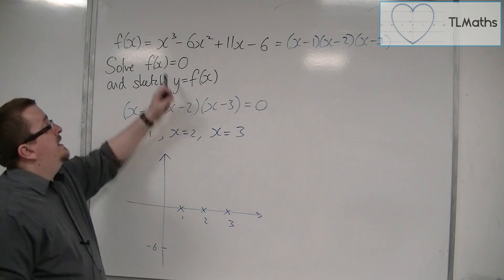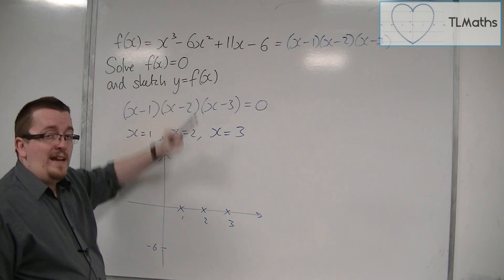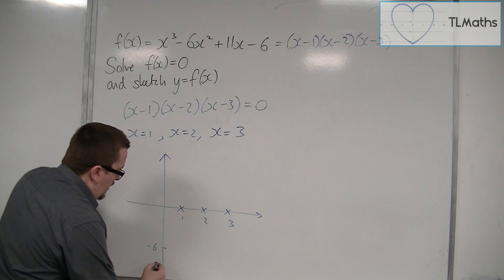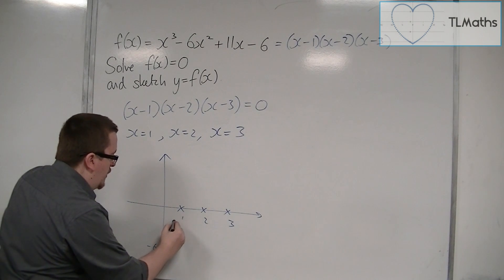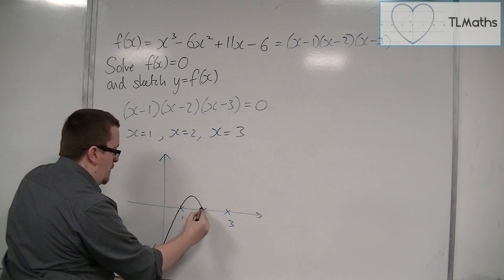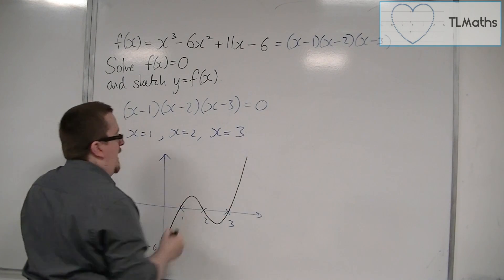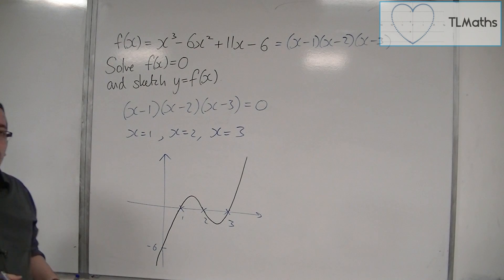Now a cubic in this case with a positive x cubed must start in the bottom left, and so it must go through minus 6, go through the 1, go back with itself to go through 2, go back with itself to go through 3, and then move towards the top right. And so this is a sketch of y equals f of x.